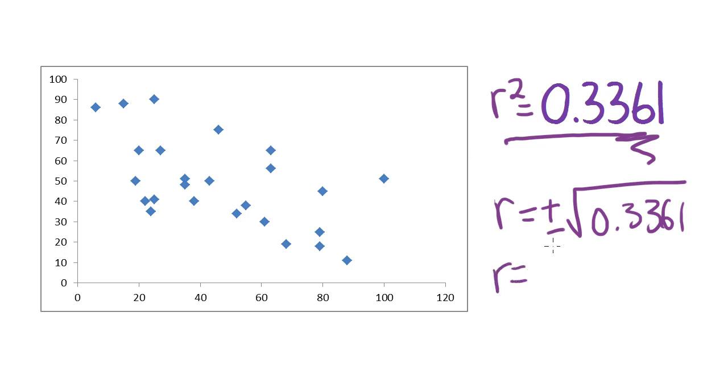You put this in your calculator to find what the square root is, and you get an answer of 0.5797. But that could be positive or negative. So we need to figure out which answer it is. Is it the positive r value or is it the negative r value? So for that, you look at your scatter plot and you say, is this going in a positive direction or a negative direction?